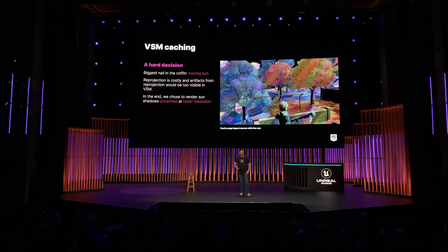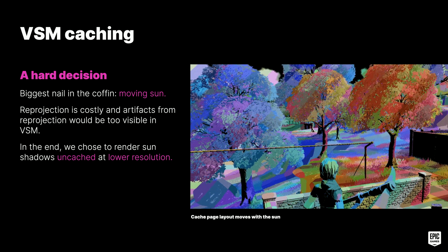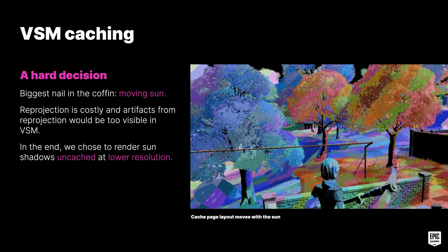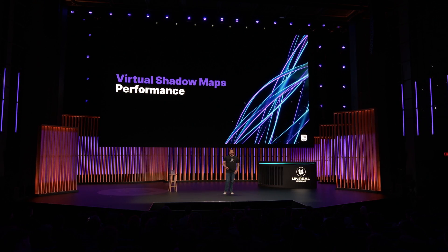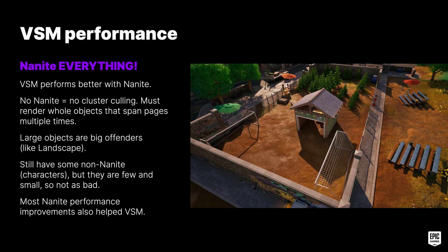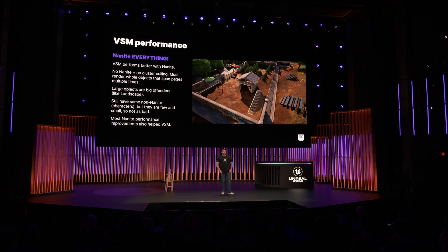The bigger problem would have been reprojecting the entire cache when the sun moves. The cost of reprojection itself is prohibitive, and resulting artifacts would be too noticeable due to VSM's filtering scheme and high resolution. We made the tough decision to disable caching for sun shadows and lowered the resolution to compensate. Without caching, pure rendering performance became paramount. Nanite objects are a better fit for VSM performance because non-Nanite meshes lack cluster culling, so whole objects must render multiple times when spanning multiple VSM pages — large non-Nanite objects are the most costly. Landscape was a big offender. We still have some non-Nanite objects like characters, but they are few and small. Since we converted so much of the scene to Nanite, any Nanite performance improvements in turn usually helped VSM performance as well.